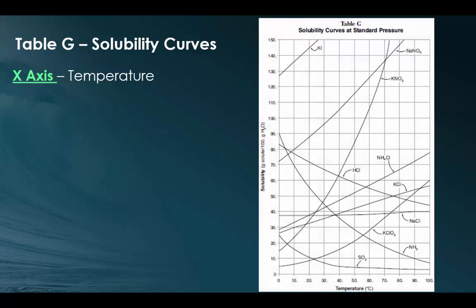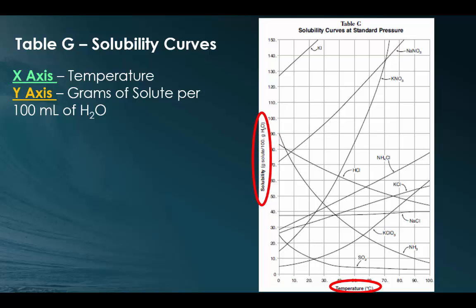So now let's take out our reference tables and flip to table G. Table G is what we're going to be using for a majority of this unit, looking at solubility curves. On the x-axis, we're noticing we have temperature in Celsius. On the y-axis, we specifically are looking at grams of solute in 100 milliliters or 100 grams of water.